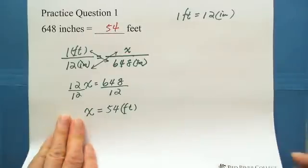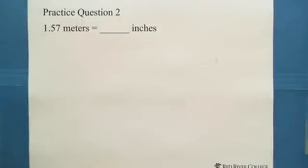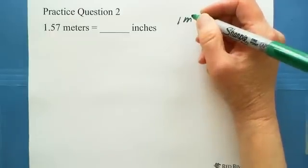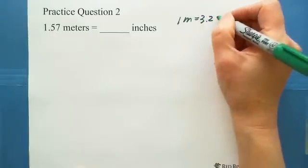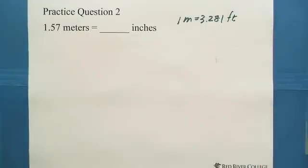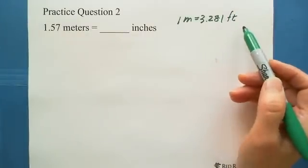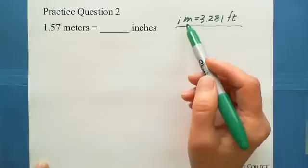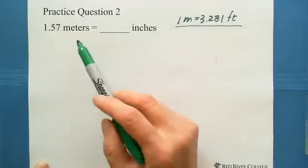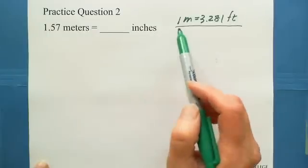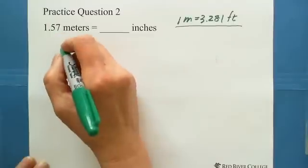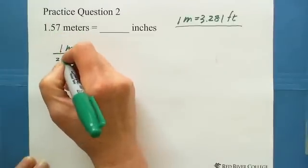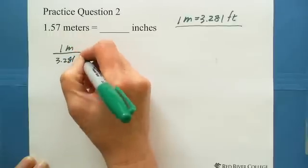Let's try the second question. The second question is 1.57 meters equals how many inches? The information you have is 1 meter equals 3.281 feet. Using this information to do this conversion. But this is given the relation between meter and feet, and we're looking for meters and inches. But we can separate into two steps.